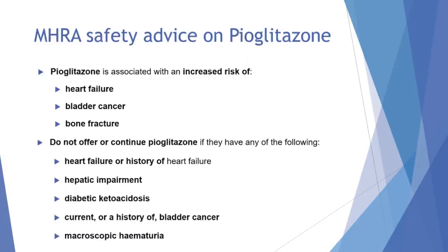We need to remember that pioglitazone is associated with an increased risk of heart failure, bladder cancer, and bone fracture. We should not offer or continue pioglitazone if a patient has heart failure, hepatic impairment, diabetic ketoacidosis, a history of bladder cancer, or macroscopic haematuria.